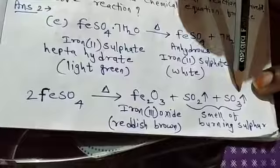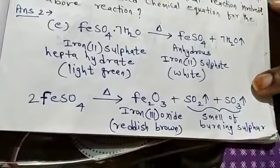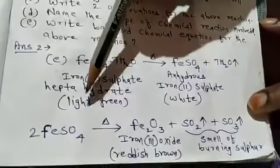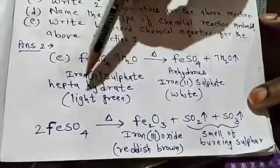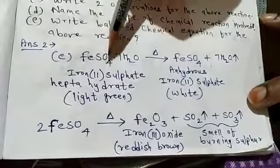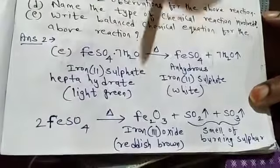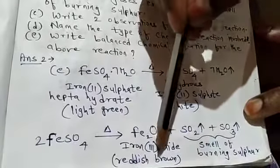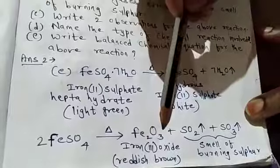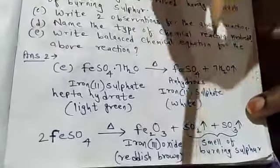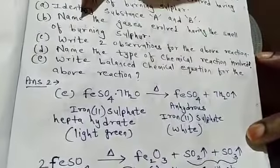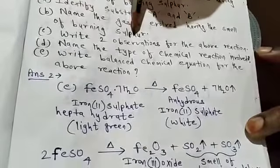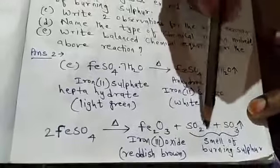So your first question is: identify substance A and B. Substance A, which is light green in color, is iron(II) sulfate heptahydrate, also called ferrous sulfate heptahydrate. Substance B, which is reddish brown in color, is iron(III) oxide, also called ferric oxide. Your second question: name the gases evolved having the smell of burning sulfur — those are sulfur dioxide and sulfur trioxide.